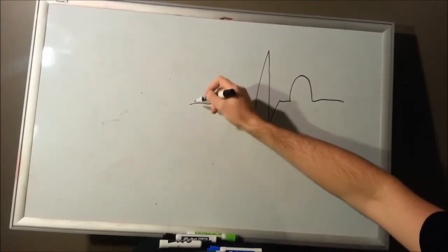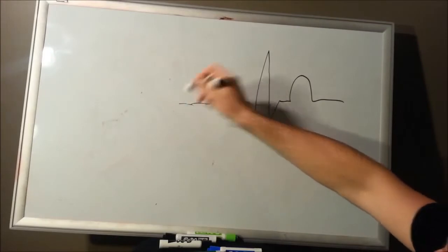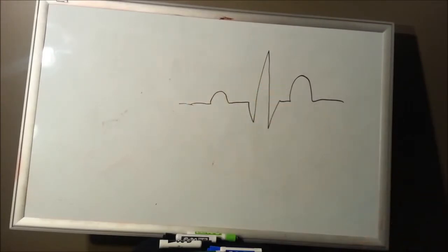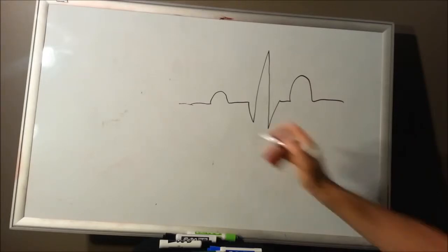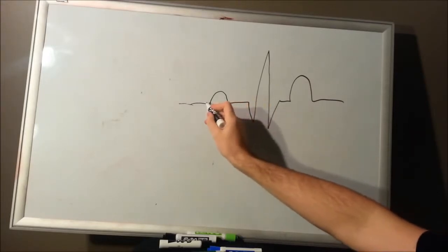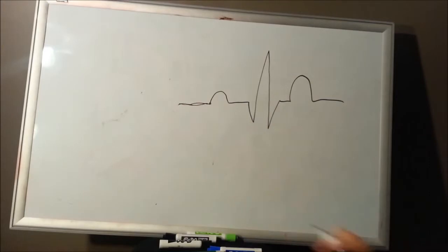You're going to have an isoelectric line, which is just going to be your resting heart. Without the heart beating, without it repolarizing, without anything happening in the heart, you're going to have this isoelectric line on the tracing. That's just your resting heart.